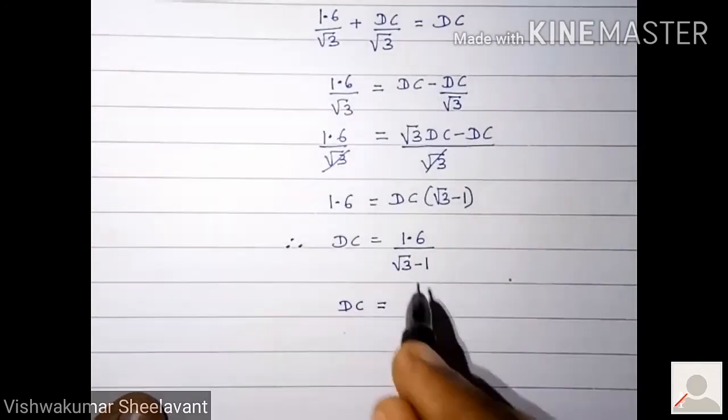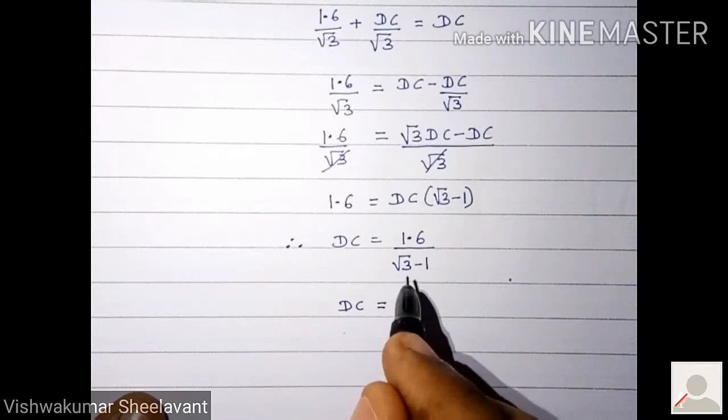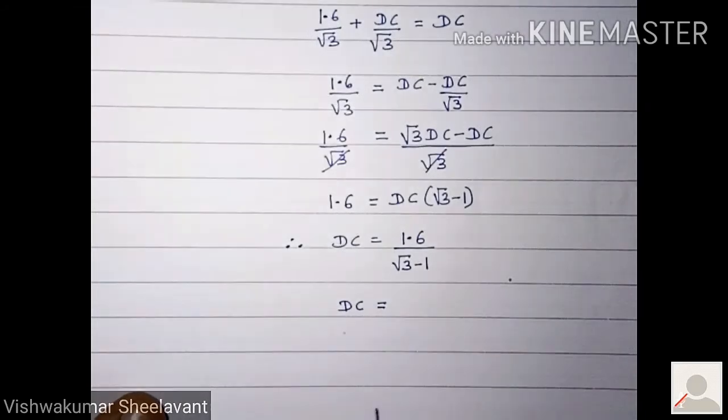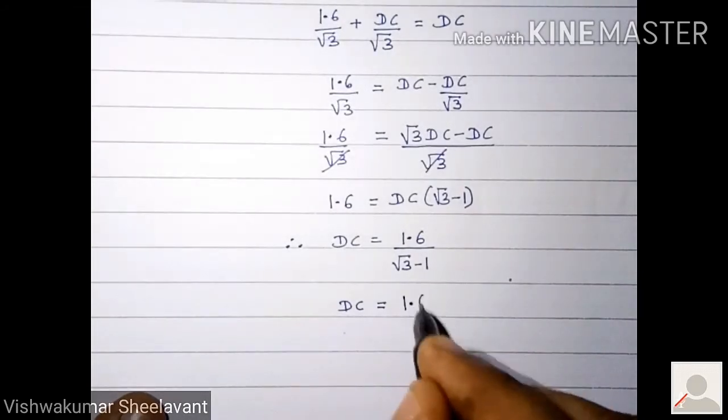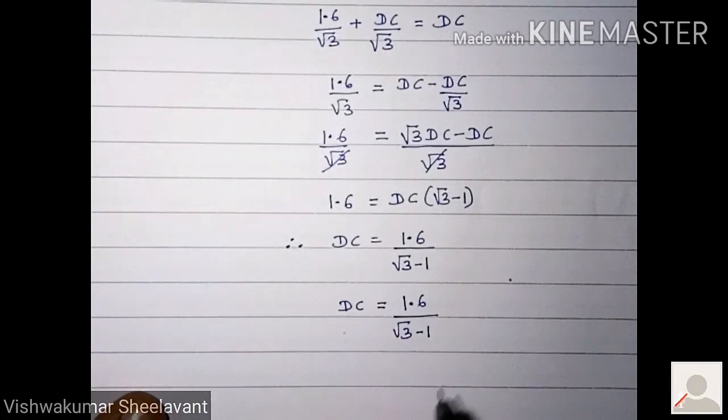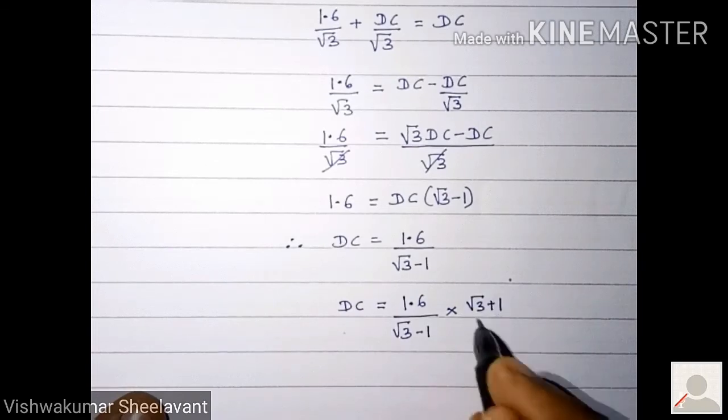Don't keep irrational numbers in the denominator. Rationalize and then write: 1.6 upon root 3 minus 1 into root 3 plus 1 upon root 3 plus 1.